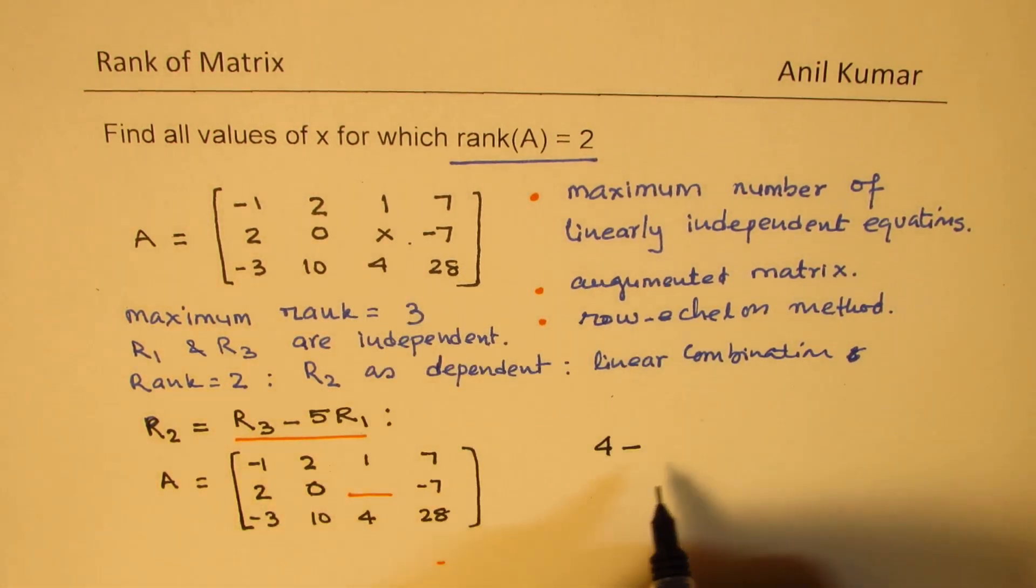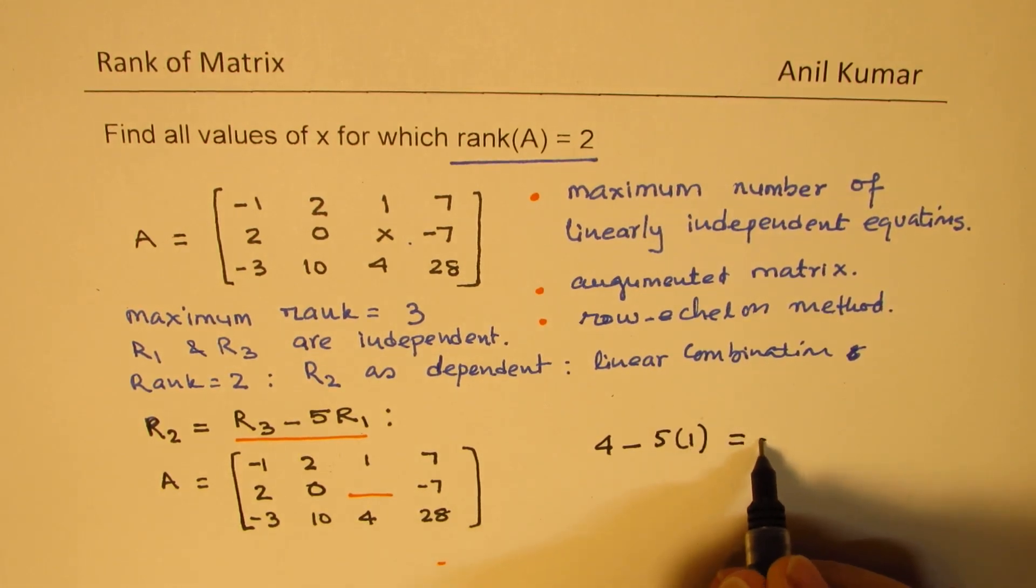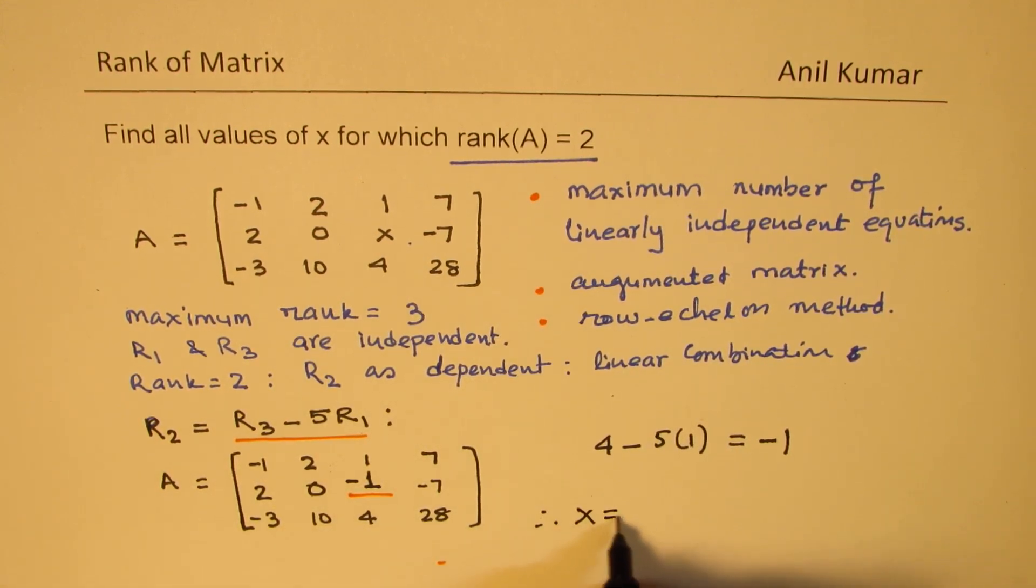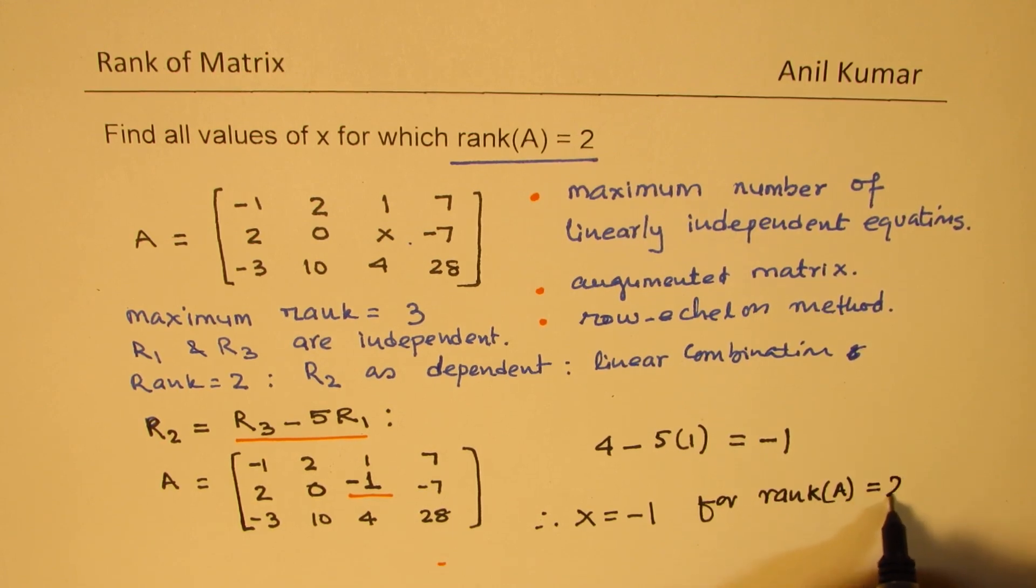Minus 5 times 1, 5 times 1 is equal to minus 1. We get minus 1 here. That is the value of x. Therefore, x equals to minus 1 for rank of A as equal to 2. Is that clear to you?